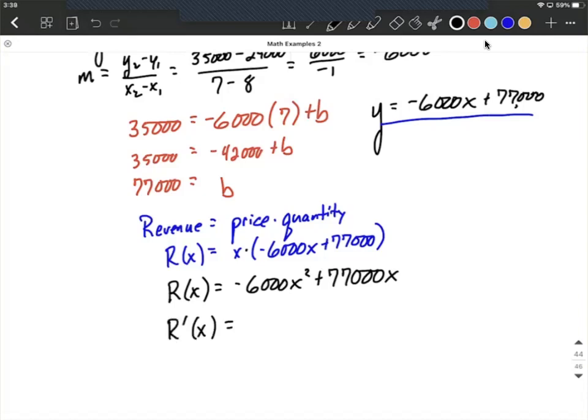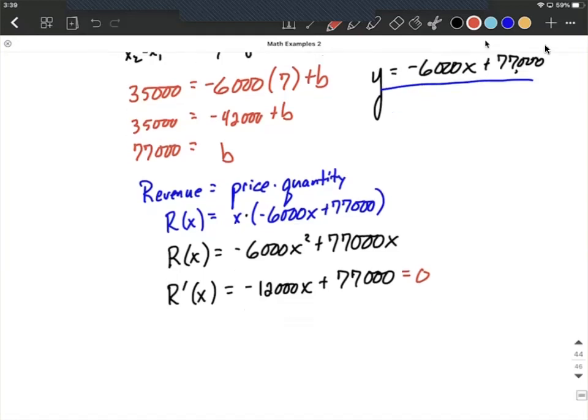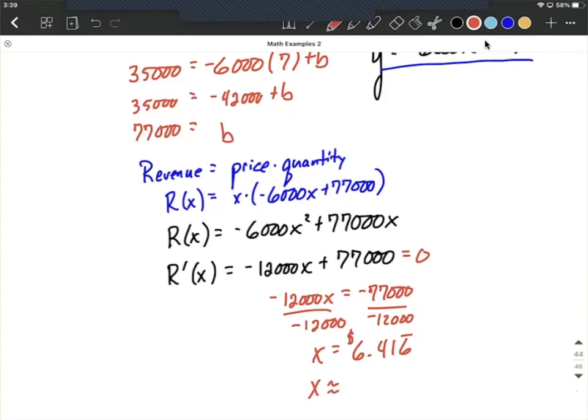Now let's find the first derivative to find any critical numbers. Using the power rule, bring the 2 down, multiply it by 6,000, so negative 12,000, reduce the exponent by 1 plus 77,000. To get the critical numbers, set this equal to zero and solve. Subtract the 77,000 from both sides, then divide both sides by negative 12,000. We get an x value of 6.416 repeating. Now recall, x was our price, so to the nearest cent, this is $6.42.